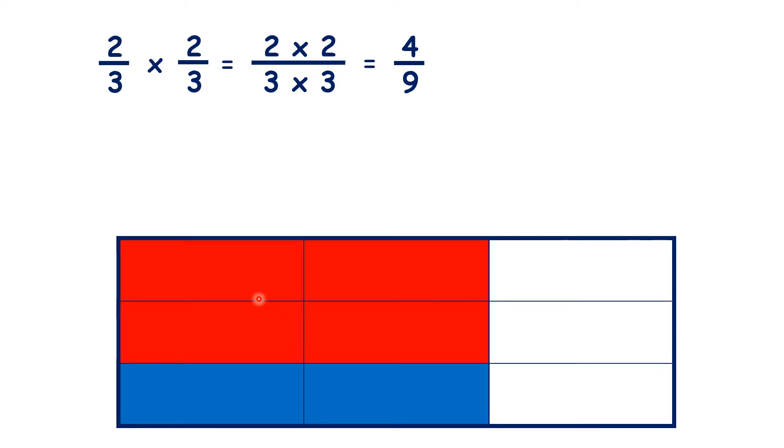So if we highlight two-thirds of our two-thirds in red, you can see that of the whole fraction bar, we now have four-ninths colored red.